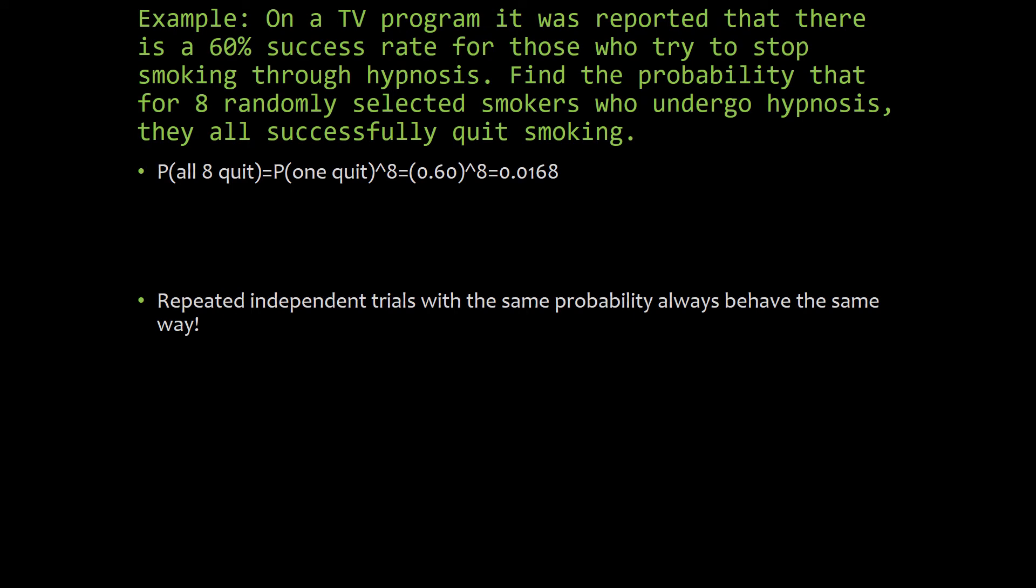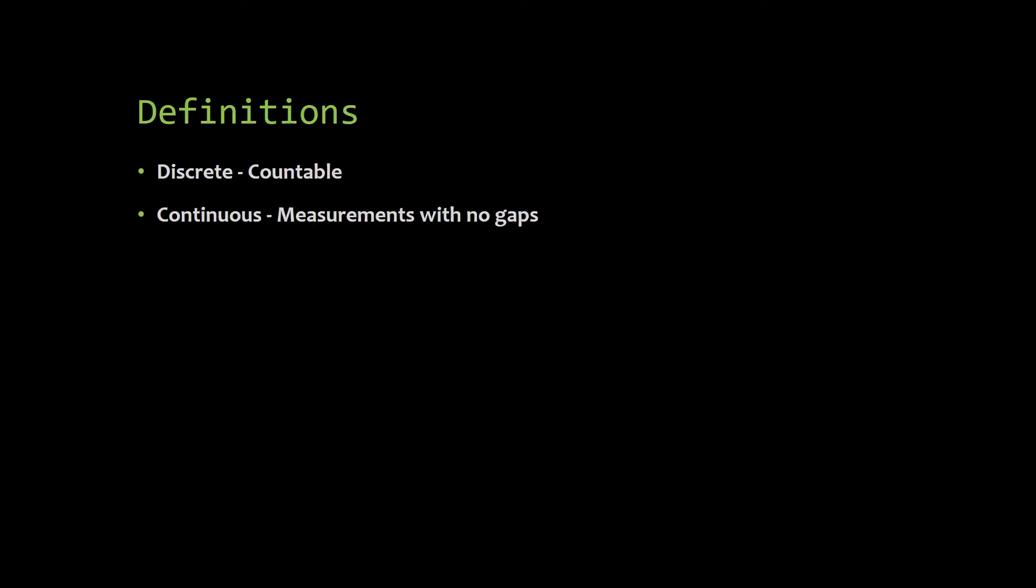If you have repeated events where none of the trials are affecting each other, they have no effect on each other, you can multiply. Do you remember what we call this? If it repeats, I can multiply.